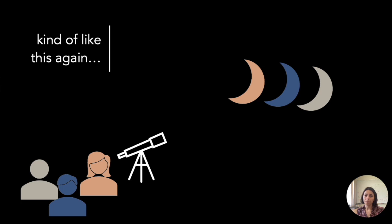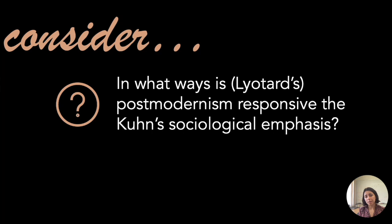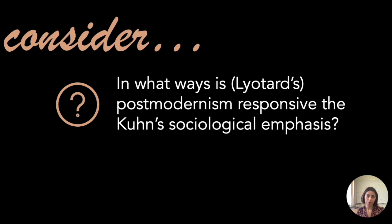In Lyotard's postmodern view, it's not only an astronomer looking at the moon — all sorts of disciplines can contribute, since science no longer has the unique way of picking out truth. Each individual studying the moon gets to do so, and no particular way is better or worse than others. We then ask: in what ways is this postmodernism responsive to Kuhn's sociological emphasis and to all the previous theories studied? We'll carry these theories forward into the particular contexts of this course to see which, if any, hold up.